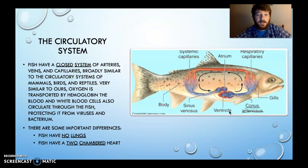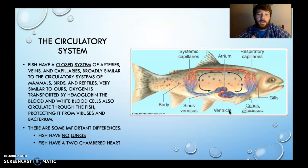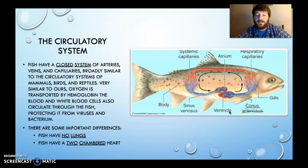Circulatory system. Fish have a closed system of arteries, veins, and capillaries — broadly similar to the system that we have. Fish actually have oxygen transported by hemoglobin in the blood. They also have white blood cells. Fish can get sick, and they do need white blood cells to protect them from various things around them, whether it be viruses, bacteria, or other illnesses that they can pick up through the water. There are waterborne illnesses.